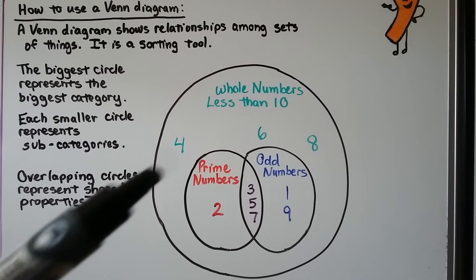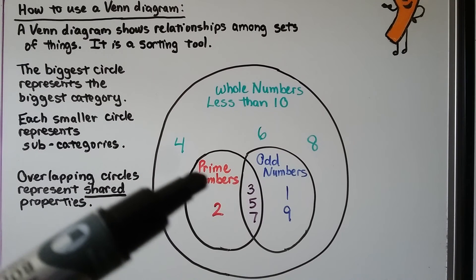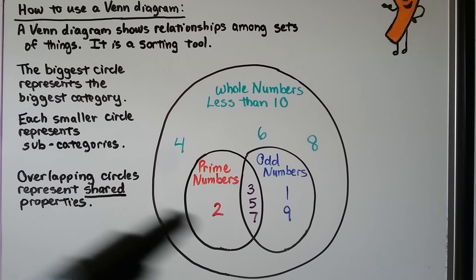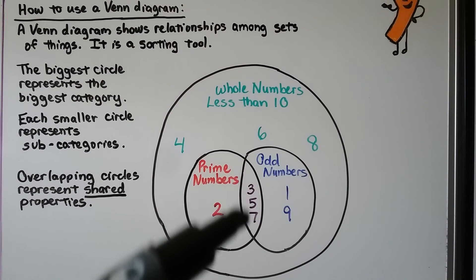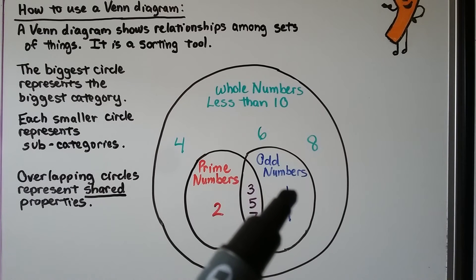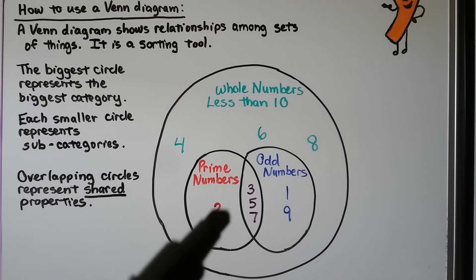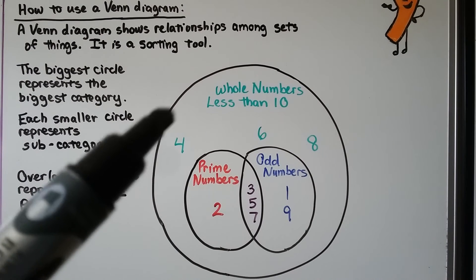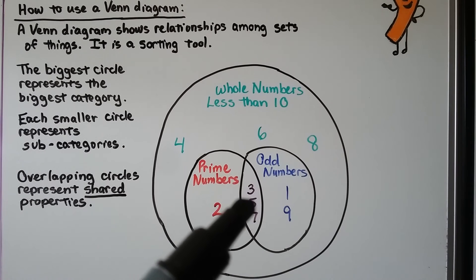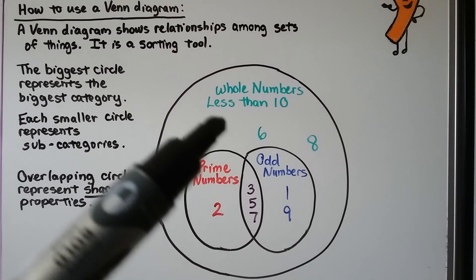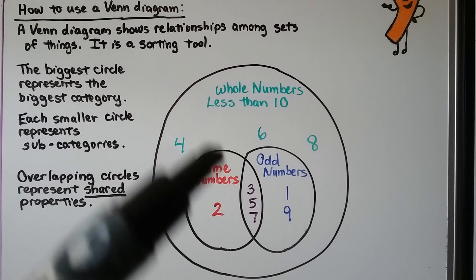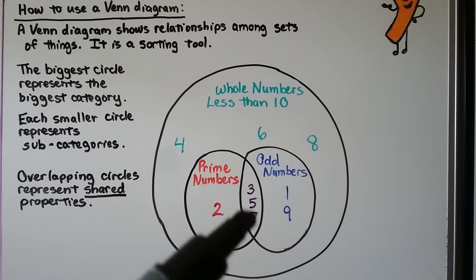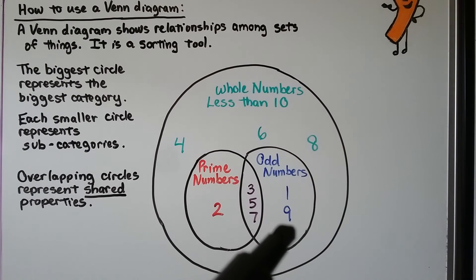For example, the big circle represents whole numbers less than ten, with subcategories of prime numbers and odd numbers. The overlapping circles represent shared properties. One is odd, two is prime, three is both prime and odd so it's in the overlapping section. Four is just a whole number less than ten. Five, seven are prime and odd. Six and eight are just whole numbers less than ten. Nine is odd. So it sorts all whole numbers less than ten into categories.